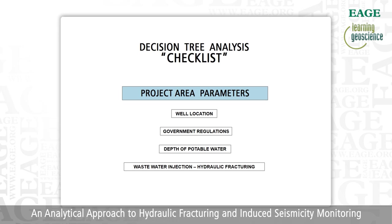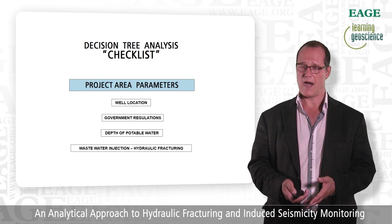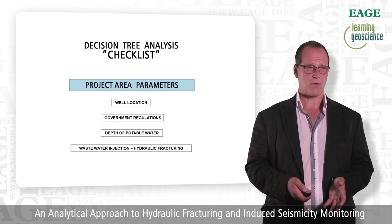Now I'm going to review the decision tree analysis checklist. I've identified three or four categories that you can put into an Excel spreadsheet and indicate with a check — yes or no — or something you need to pay attention to as you go forward. In your project area: where is your well location going to be? Are there government regulations you need to pay attention to? What is the depth of potable water? And is this a wastewater injection project or hydraulic fracturing?